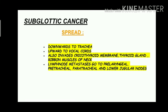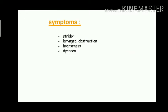The third type is subglottic cancer. The spread of subglottic cancer: it spreads downwards to the trachea and upwards to the vocal cords. It also invades the cricothyroid membrane, thyroid gland, and the strap muscles of the neck. Lymph node metastasis is seen, with spread to the peralaryngeal, pretracheal, paratracheal, and lower jugular nodes. Symptoms include stridor, laryngeal obstruction, hoarseness of voice, and dyspnea.